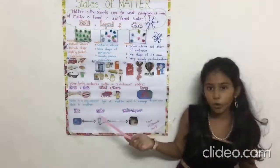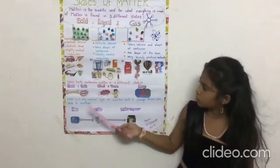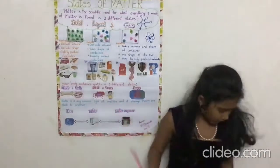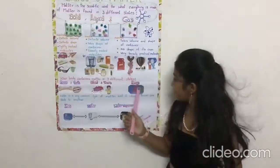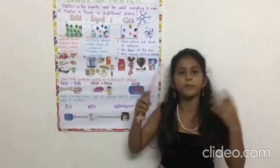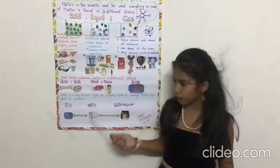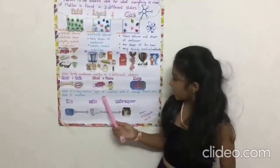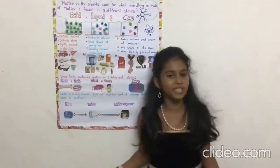Did you know your body contains matter in three different states? For solid we have bones and teeth, for liquid we have blood and tears, and for gas we have our lungs. Did you know water is a very common type of matter and it changes from one state to another? If you want to change ice to water, we need to melt it under the sun, and for water to water vapor we need to boil the water.